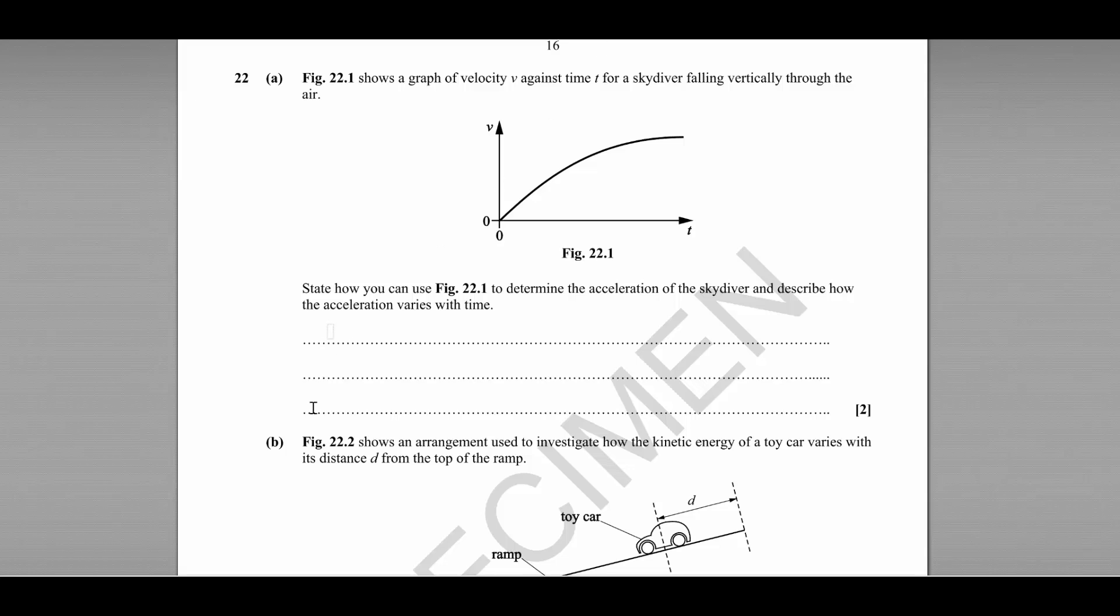From a velocity time graph we can use the gradient equals the acceleration because the gradient represents the rate of change of velocity. And we can see from this graph the gradient is getting shallower so the acceleration is decreasing.